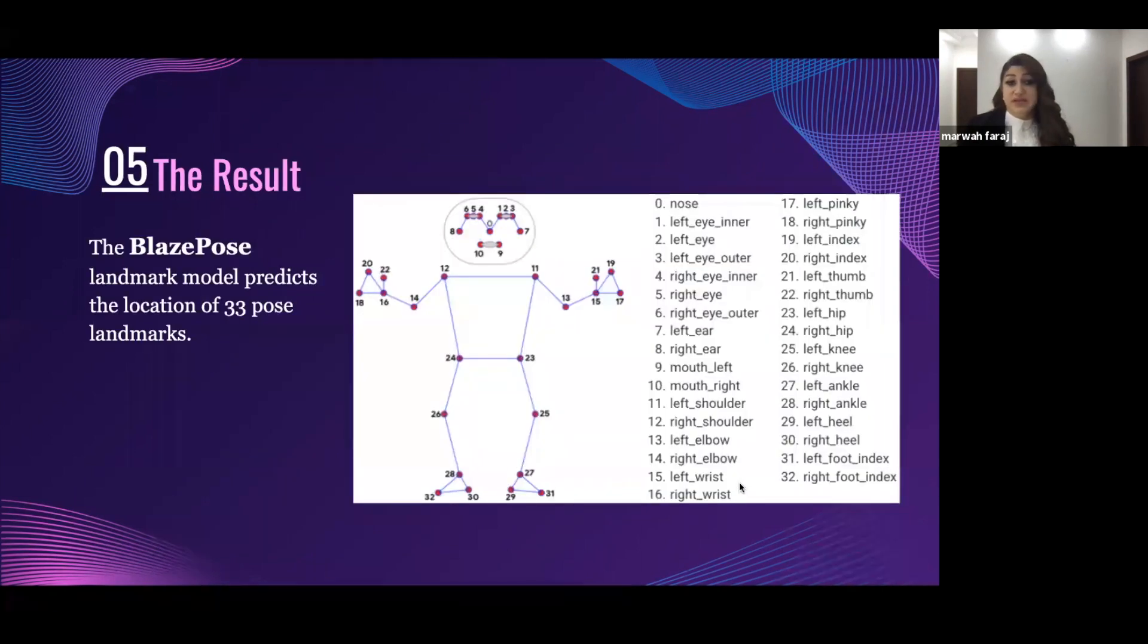As a result, the MediaPipe pose landmark model predicts the location of 33 pose landmarks of any object. As we see in this picture, it puts a number on each joint.